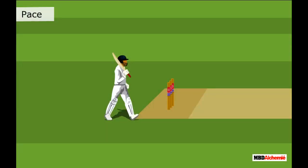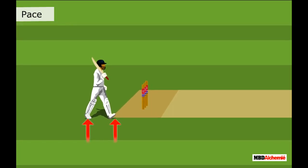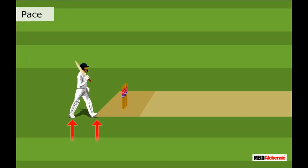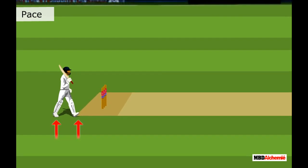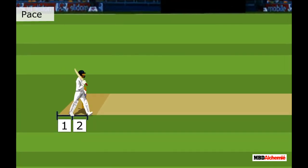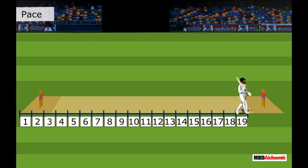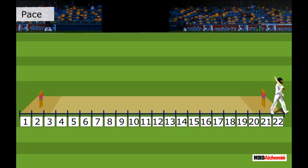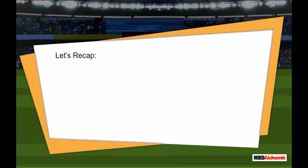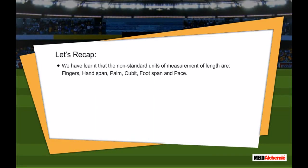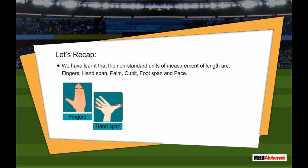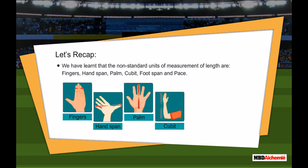Pace is the distance between two successive falls of the same foot, thus one pace is equal to two steps. For example, the length of this cricket pitch is about twenty-two paces. To recap, the non-standard units of measurement of length are fingers, hand span, palm, cubit, foot span, and pace.